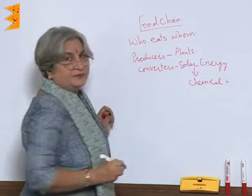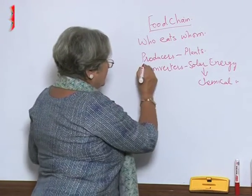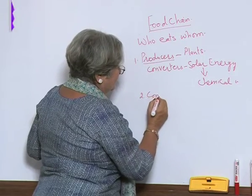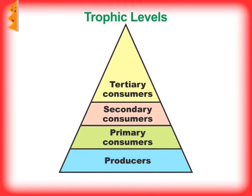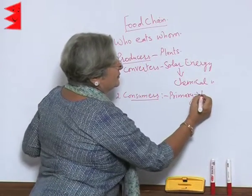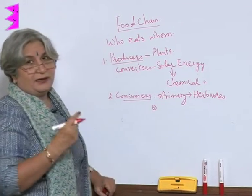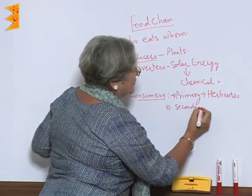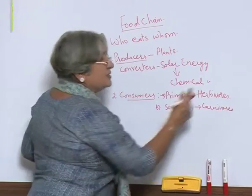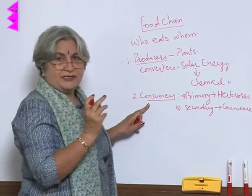Now, there are some animals which eat plants either directly or indirectly — these animals are called consumers. Consumers can be of many types depending on the type of food they eat. Primary consumers eat plants directly and are also called herbivores. Then herbivores are eaten by other animals — the carnivores — making them secondary consumers. Within consumers there can be two or three layers.